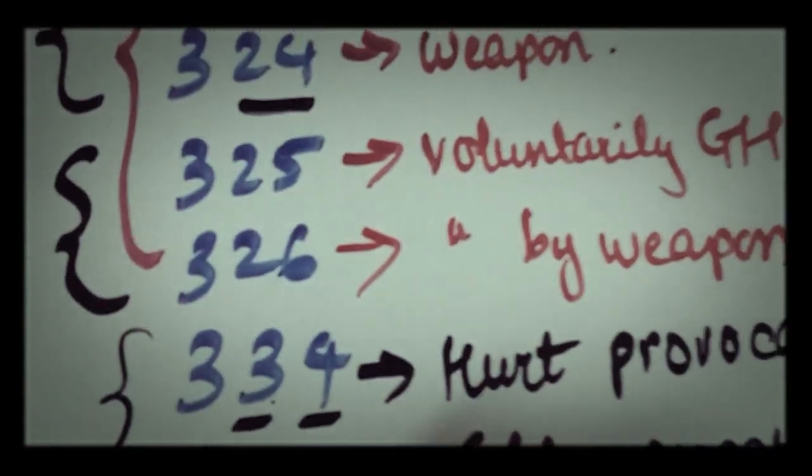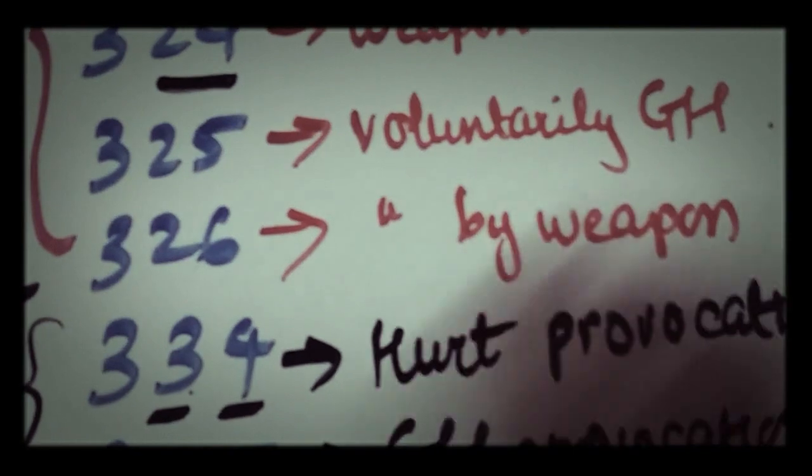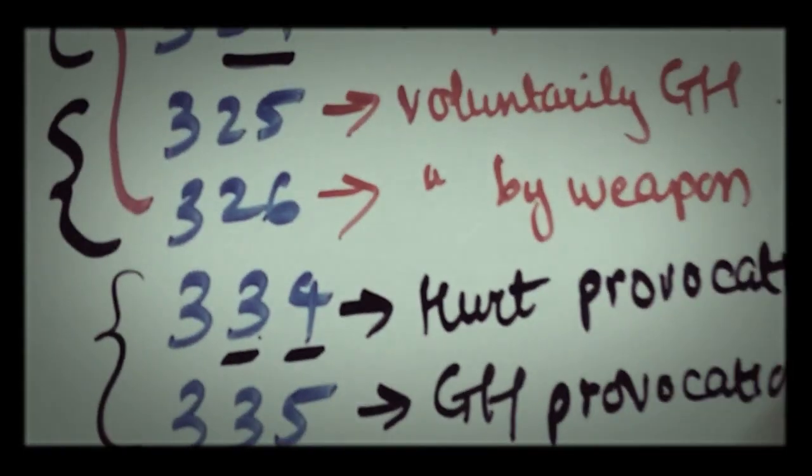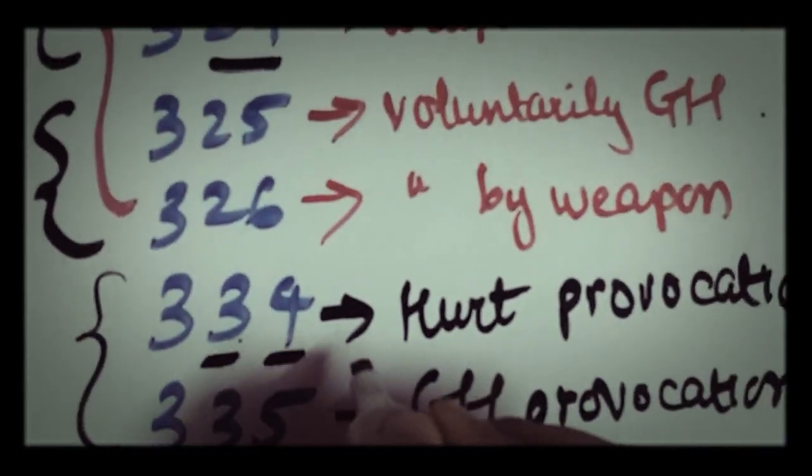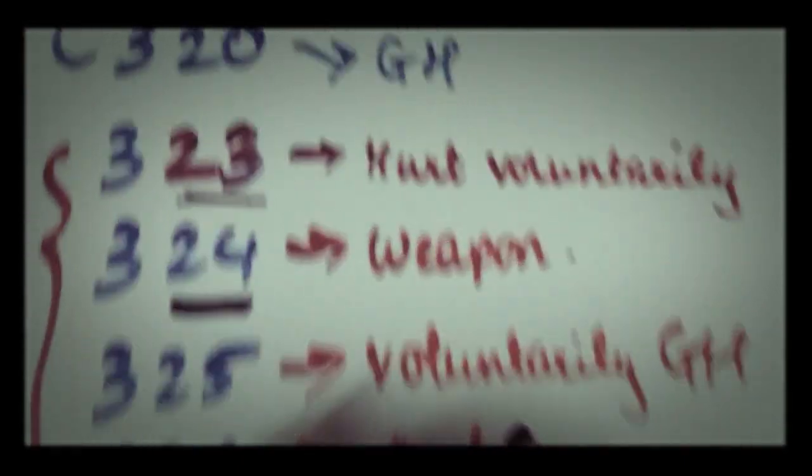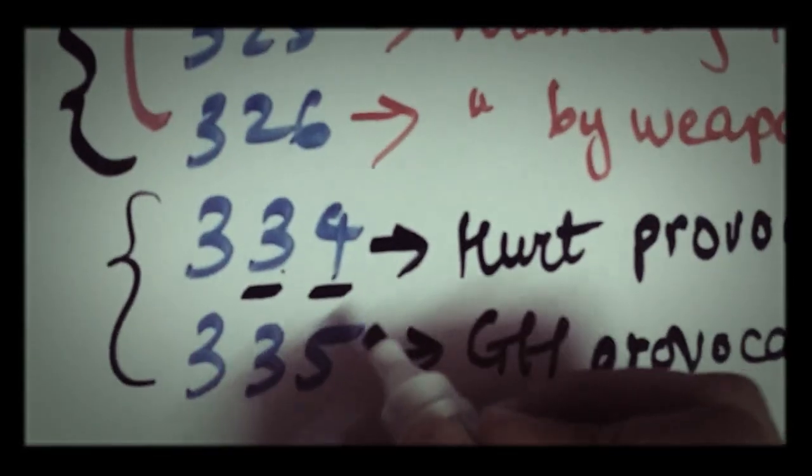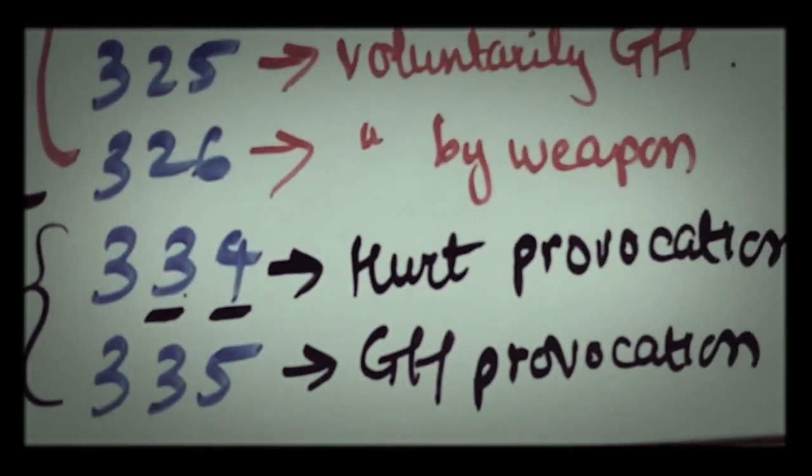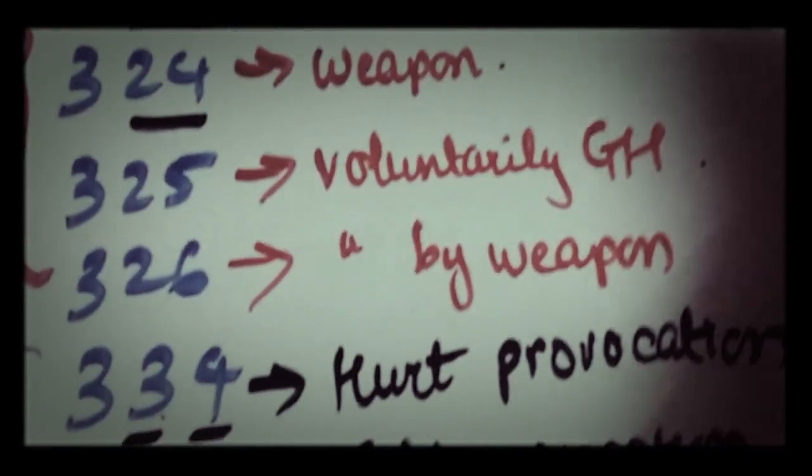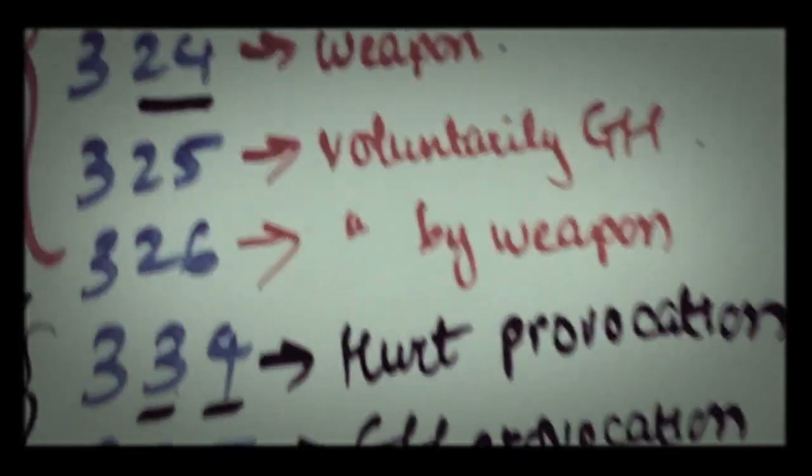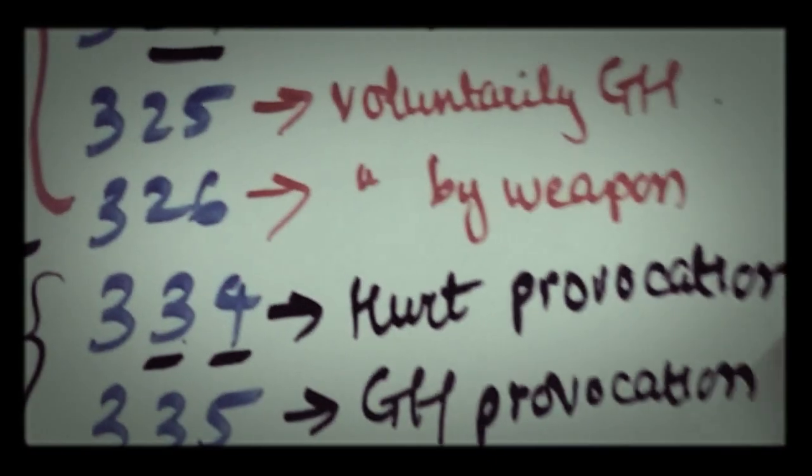And then after the two hurts we have the two grievous hurts, which is voluntarily or with a weapon. And then we have by provocation, so we go back to the voluntary hurt, and then we add one to each of the digits, so we end up getting 334 and 335 for hurt by provocation and grievous hurt by provocation.